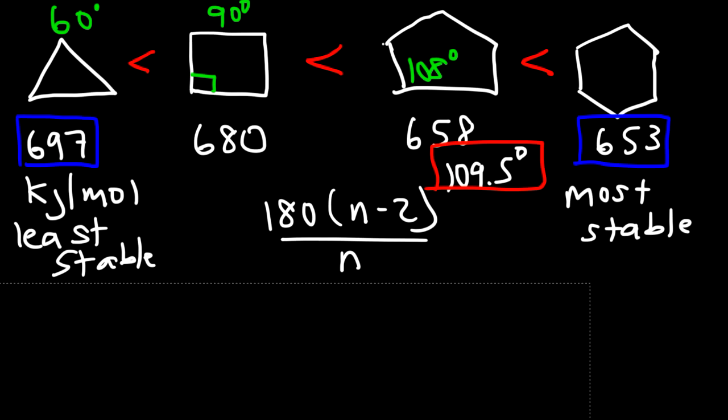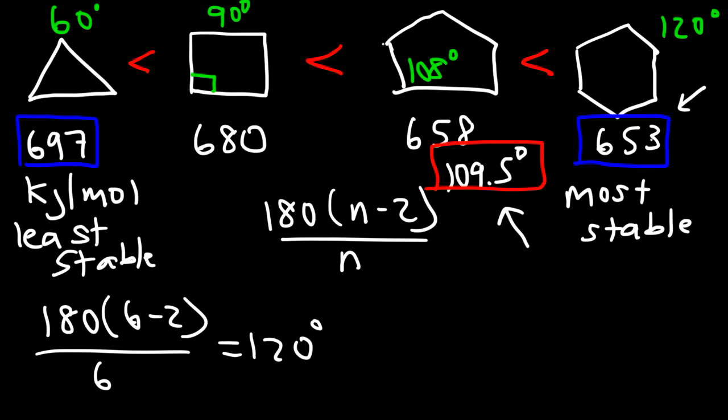Now what about cyclohexane? What's the situation here? So it's basically a hexagon with six sides. And 6 minus 2 is 4. 4 times 180 is 720. 720 divided by 6 will give you 120. So the ideal angle for a hexagon, the interior angle, is 120. Now, cyclohexane doesn't form a flat hexagon. In fact, it can basically bend into a chair conformation. And so it could form the ideal angle of 109.5. The cyclohexane doesn't have any ring strain or angle strain. And so that's why it has the lowest heat of combustion per CH2 group.